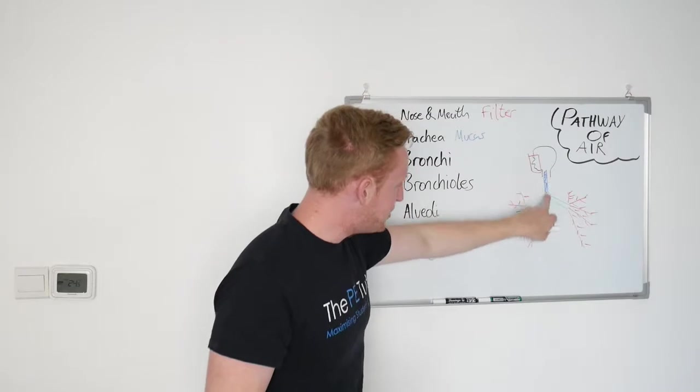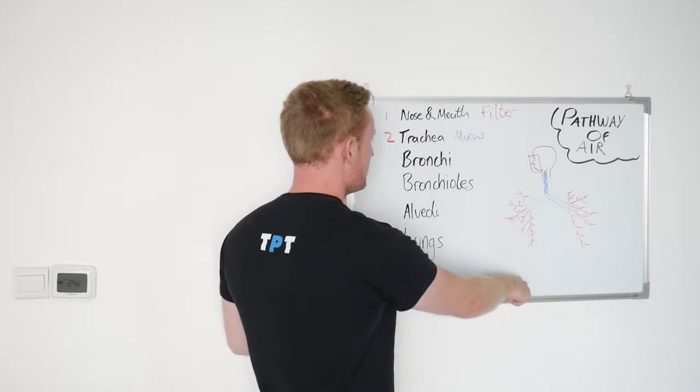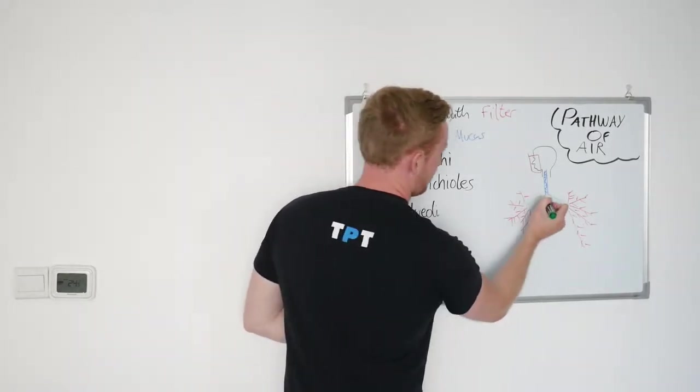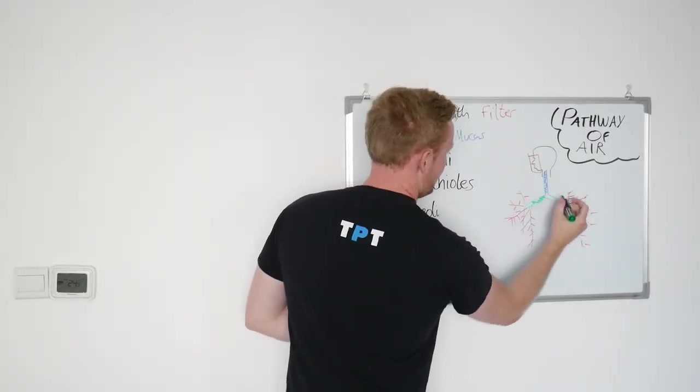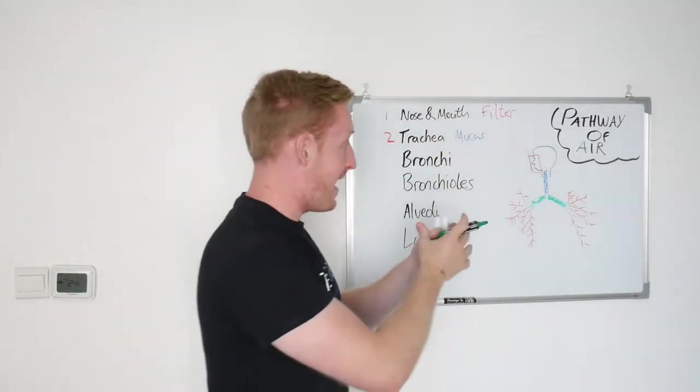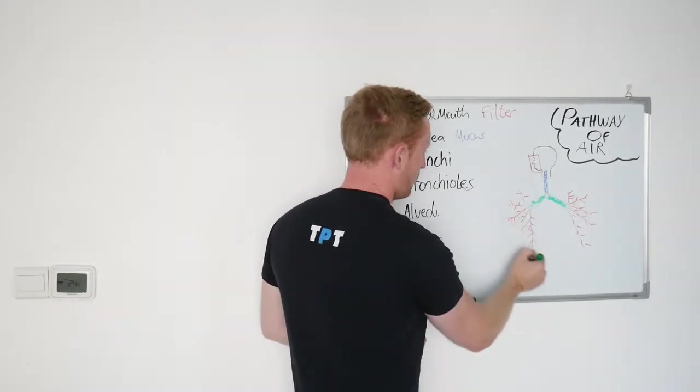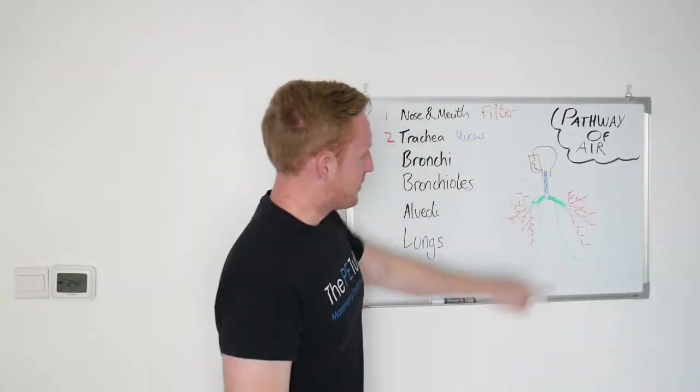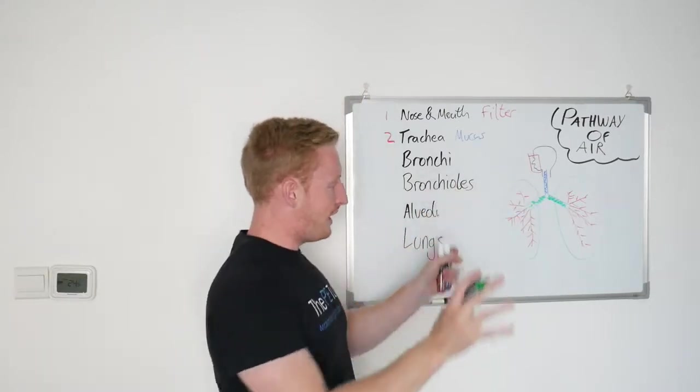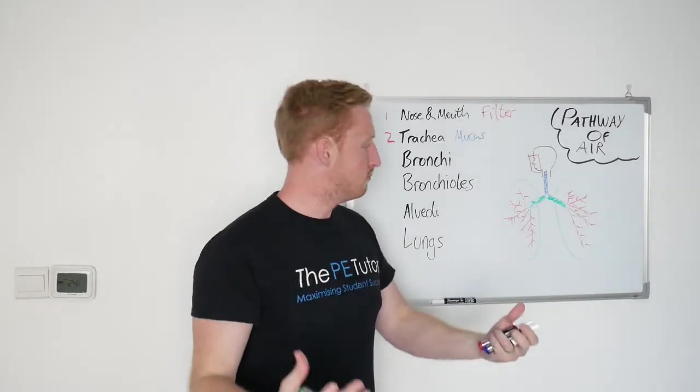Once air has finished in the trachea, so it's got to the end of that blue section there, it now enters the bronchi. We've got two of these. They serve the role of dividing this air up into each lung, because obviously we've got two lungs, one on this side and one on that side.